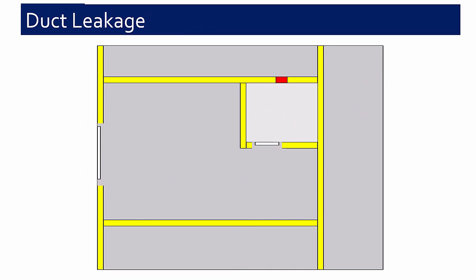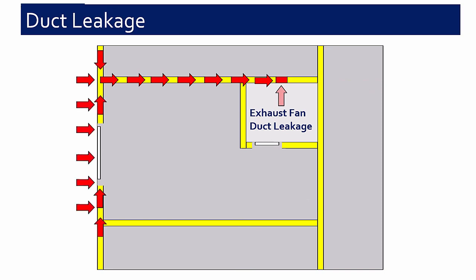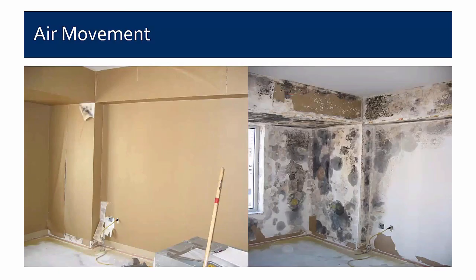Another situation comes from duct leakage. With the same exhaust fan example, if the duct is leaking air through the ductwork, the entire wall can act as a duct. If the duct is located in the wall, leakage at the joints pulls air from the wall — potentially pulling air from outside or, in the case of reservoir cladding, from the brick cavity space. This example had vinyl wall covering. When the vinyl wall covering was pulled back, the upper soffit was acting as an unintended duct — the bathroom exhaust leaking through the joints was pulling air from the wall through that soffit.